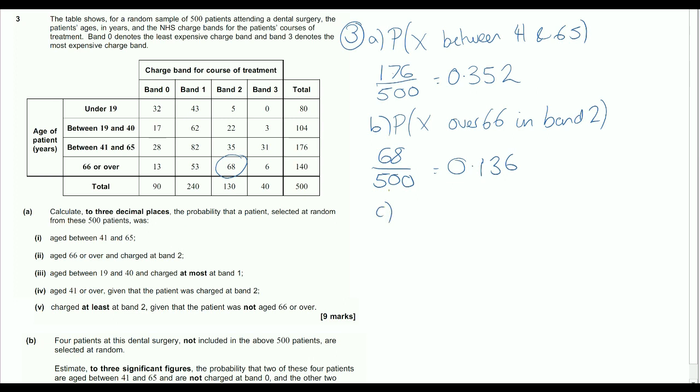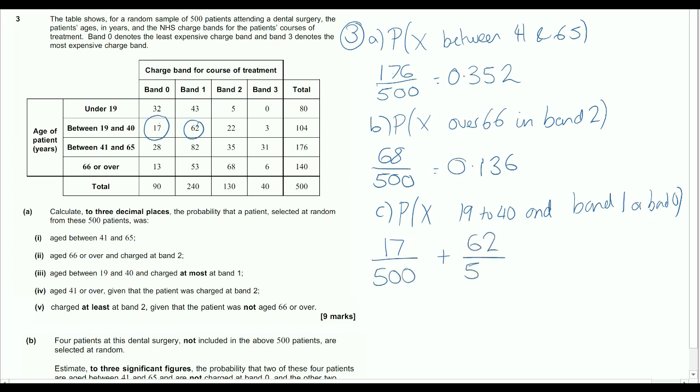Now for part C, is aged 19 to 40 and charged at most band 1. So the probability that they are 19 to 40 and band 1 or band 0, because then they would be being charged at most band 1. So we are looking for the people who are in band 0 there, 17 of them, and the 62 there. So either of those two can happen. So it's either 17 out of 500 or the 62 out of 500. And when we say or, we are always adding those two together.